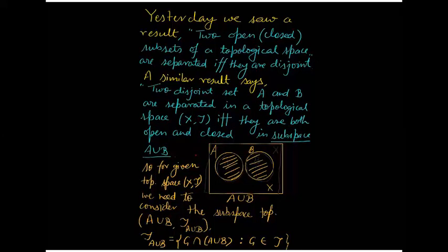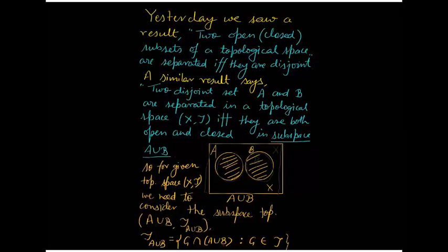There is a slight difference between yesterday's result and today's result. Today I am taking two disjoint sets A and B, calling them separated, but the necessary and sufficient condition being stated is that they will be both open and closed in the subspace A∪B. The subspace topology τ_{A∪B} = {G ∩ (A∪B) : G ∈ τ}, where G is any τ-open set. Intersecting with A∪B gives us the subspace topology over A∪B.